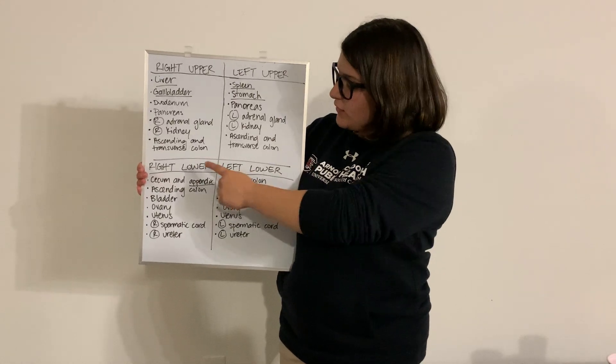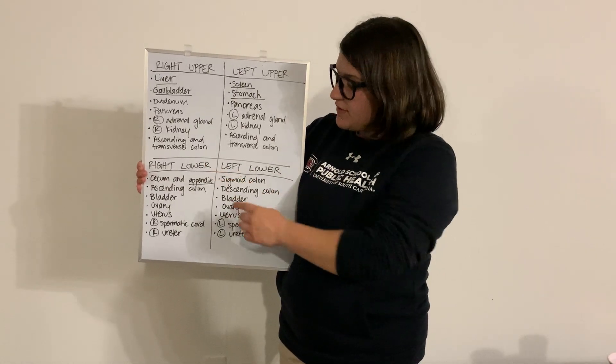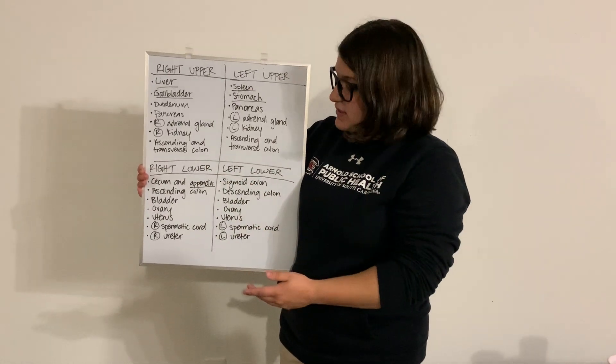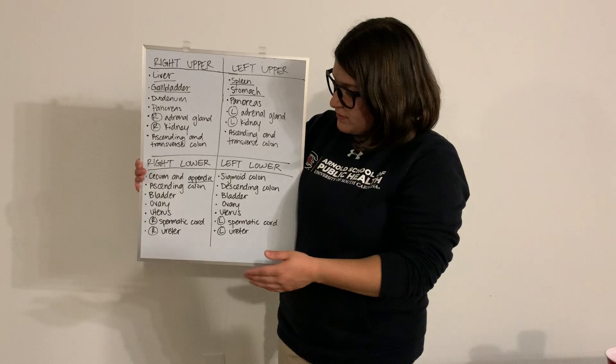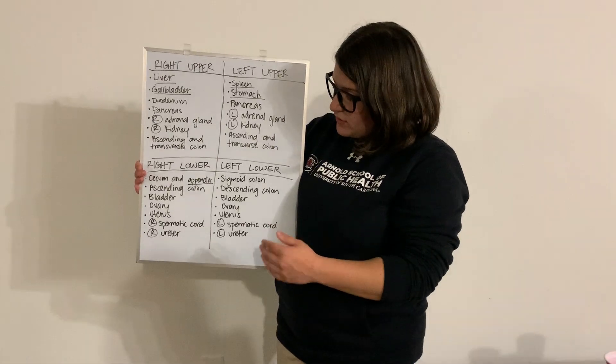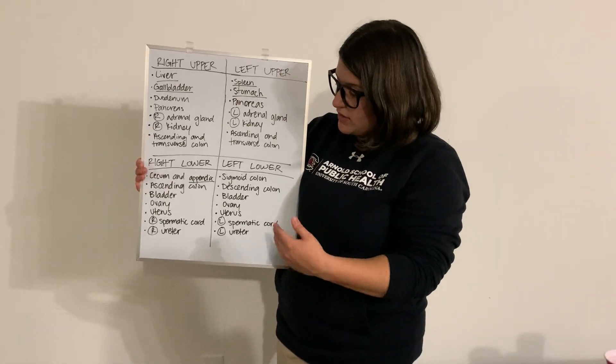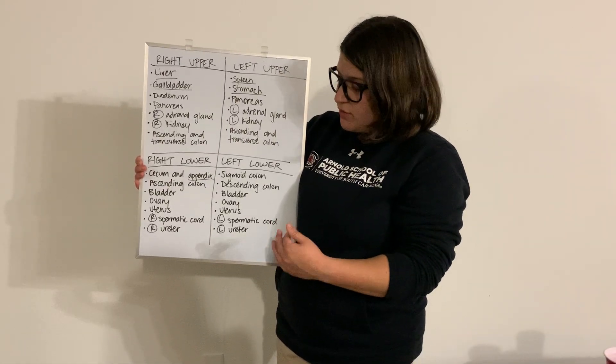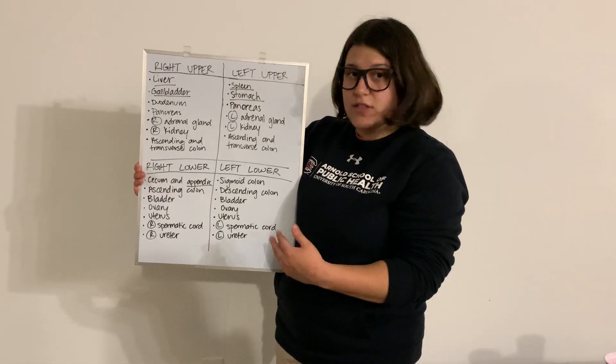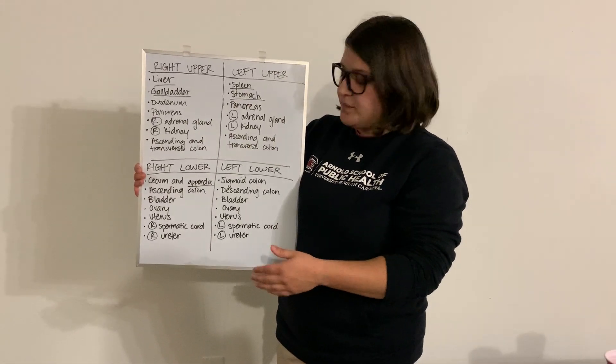Down in the right lower quadrant we're going to have the cecum and appendix, the ascending colon, bladder, ovary, uterus, right spermatic cord, as well as the right ureter.